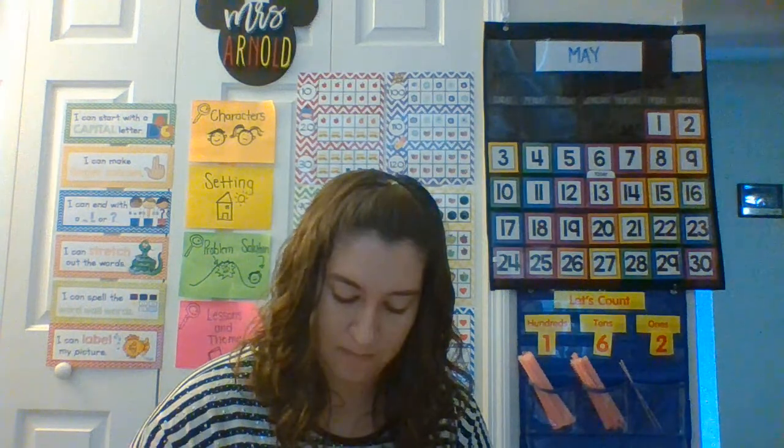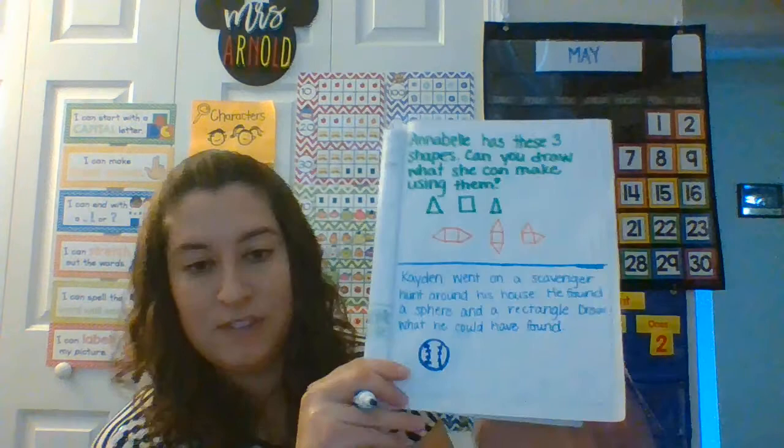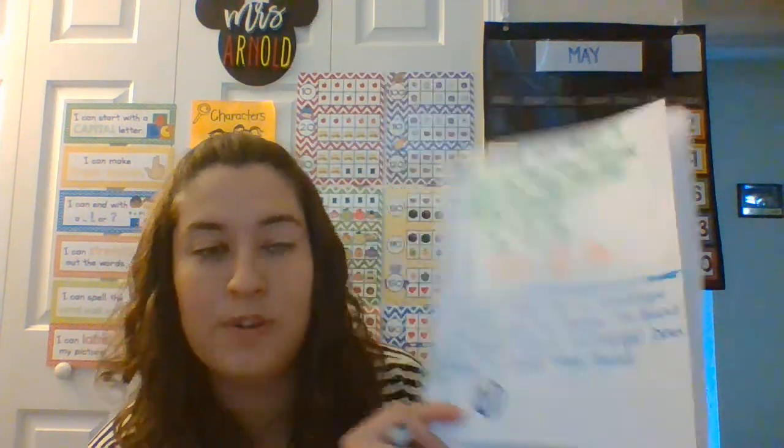So let's review our problem of the day from yesterday, and then we'll start our lesson for today. Our problem of the day yesterday was Caden. Caden went on a scavenger hunt around his house. He found a sphere and a rectangle. Draw what he could have found. So I'm going to think about a sphere — what kind of spheres could I find around my house? Maybe a ball. So I'm going to draw a soccer ball. Maybe a baseball — a baseball would be easier to draw than a soccer ball. Any type of sphere or ball-like object would count. And then we have a rectangle. When I think of a rectangle, I think of books immediately, so I'm going to draw a book.